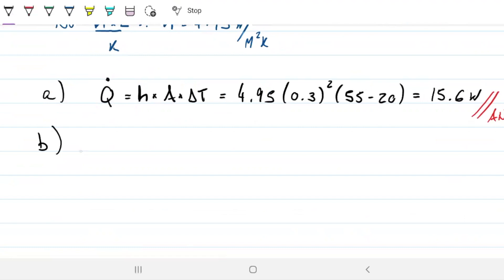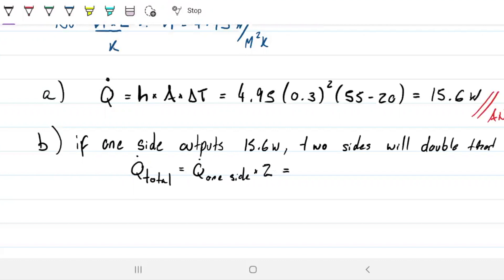So if one side gives us 15.6, then two sides are going to give us double of that, which is 31.2. Q total, or Q from two sides, equals Q from one side times two. And keep an eye out on your question to see if you need to multiply by two or not. So that's 31.2 watts. All right, questions on this problem?